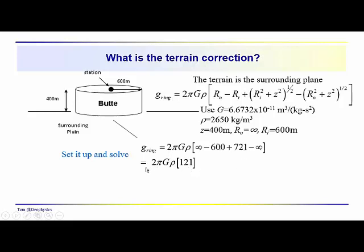And we get that the ring, if you will, or the terrain in this case, has an influence 2πGρ times 121. And that would give you 13.45 milligals.